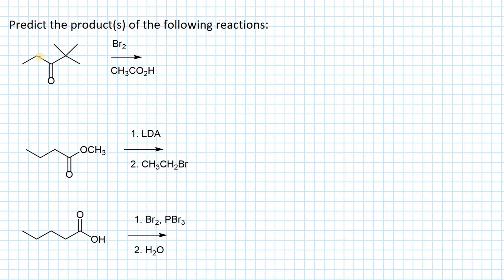The first reaction has a ketone with reagents Br2 and acetic acid. This is alpha halogenation of a ketone — we are going to substitute an alpha proton with bromine. There are two alpha positions: one with two acidic hydrogens, and a second position with three methyl groups and no hydrogens.